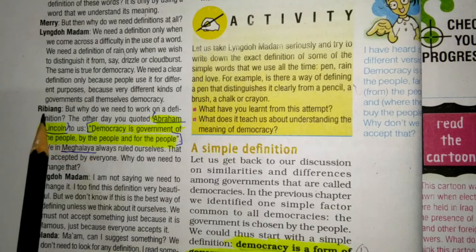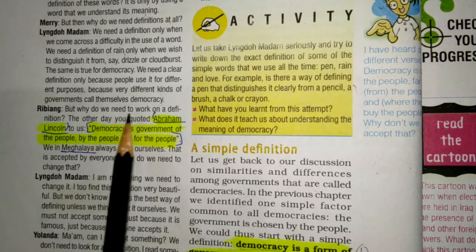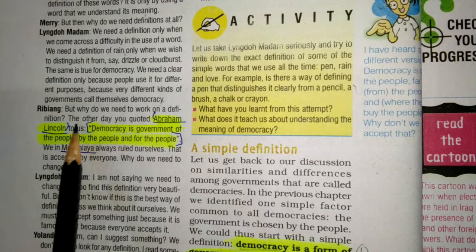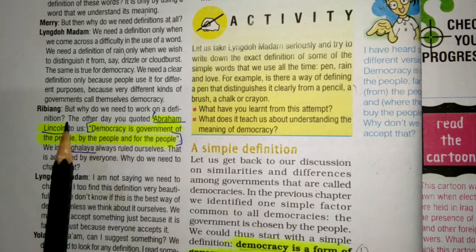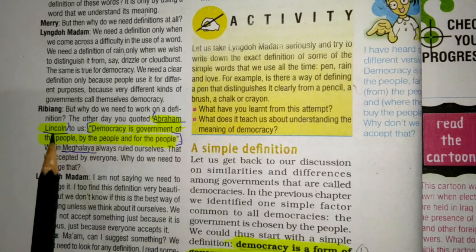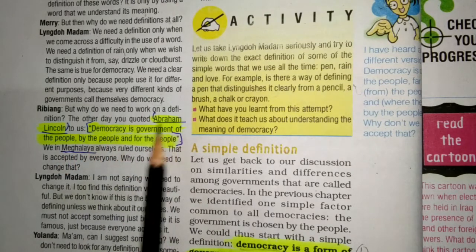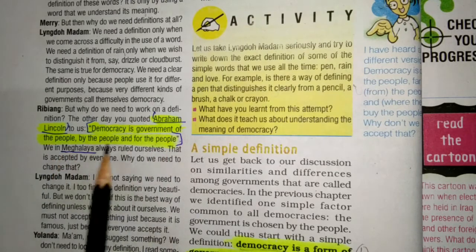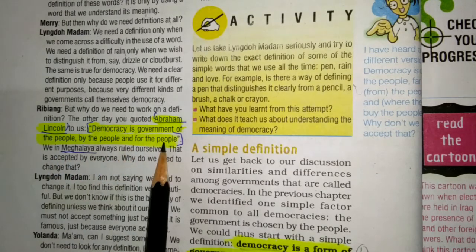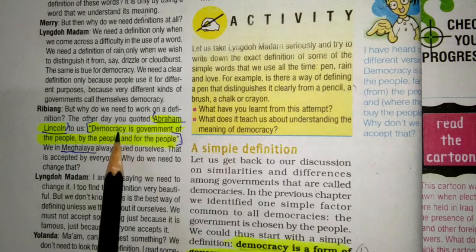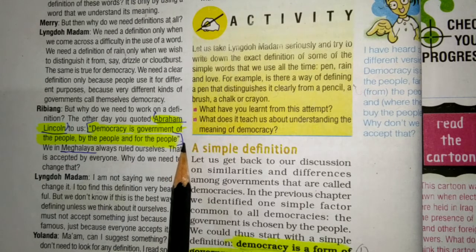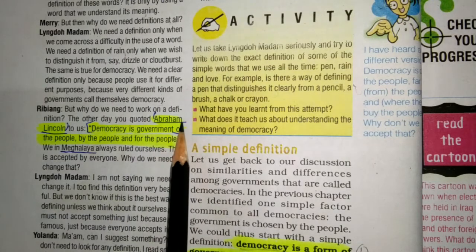अब class का एक और student Ribiang कहता है: 'But why do we need to work on a definition? The other day you quoted Abraham Lincoln — democracy is government of the people, by the people, and for the people.' यानि democracy एक government है लोगों की, लोगों के द्वारा, और लोगों के लिए। Students, इस definition को learn कर लेना — यह काफी बार question में आती है।